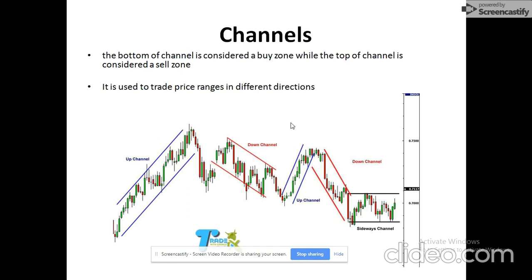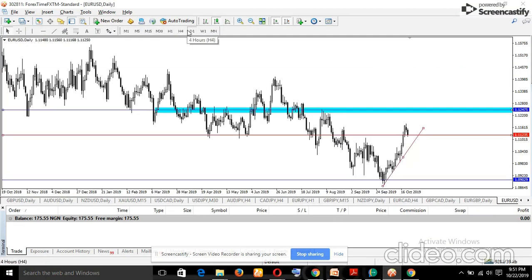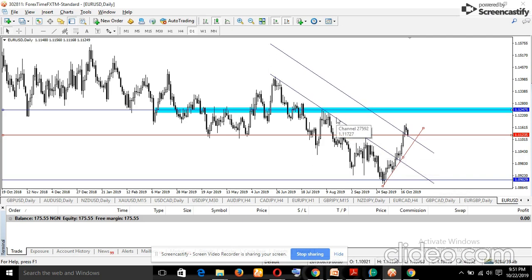Channels are not just a single trend line — they are parallel lines drawn using the equidistant channel tool. They help you trade price ranges in different directions. You can have an up channel, a down channel, or a sideways channel. At the bottom of the channel are buying opportunities, and at the top are selling opportunities.